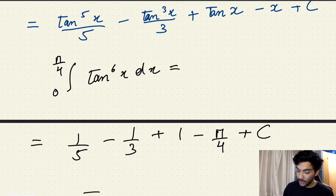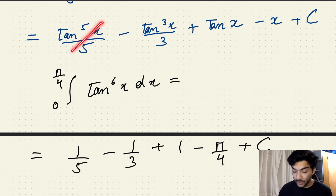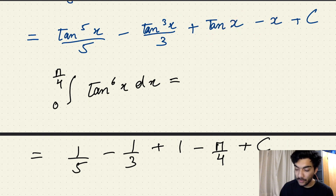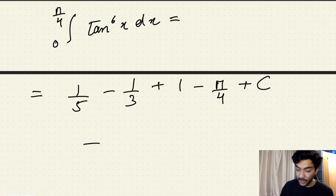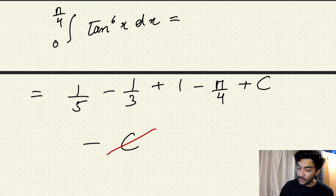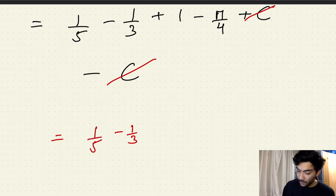Then we subtract the expression obtained by substituting x equals 0. Since tan of 0 is 0, all tan terms become 0 and x becomes 0, so only the constant of integration remains. We subtract that constant of integration as well, so the two constants cancel. The final answer is therefore 1 over 5, minus 1 over 3, plus 1, minus pi by 4.